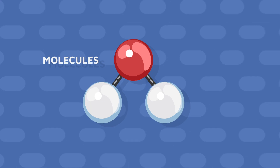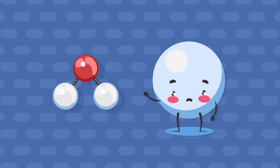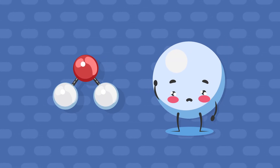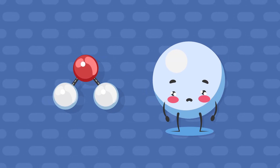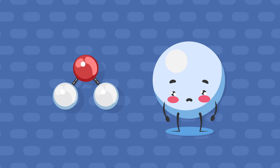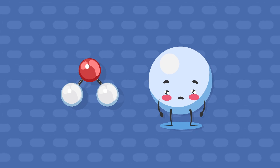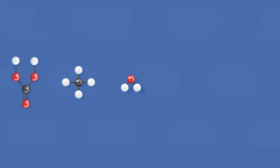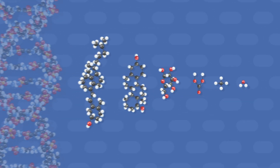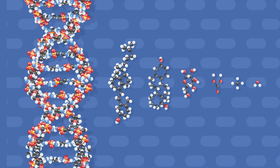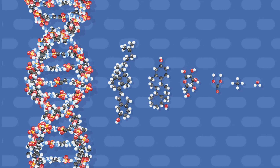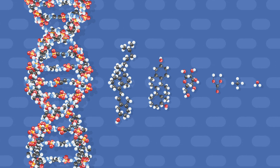There are small molecules, like the water molecule, which consists of just three atoms. And there are also huge molecules like DNA, which consists of millions of atoms.